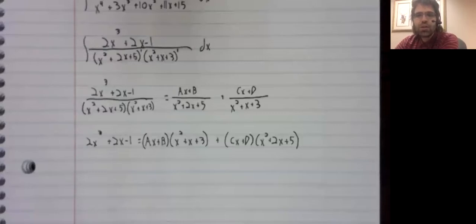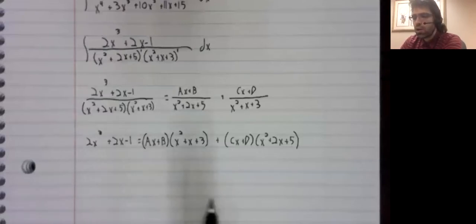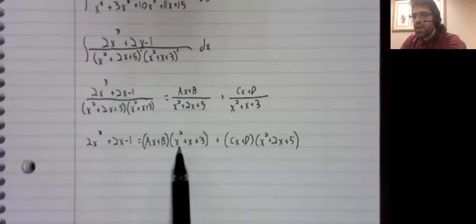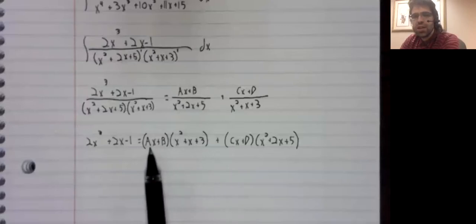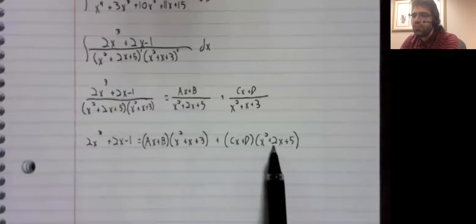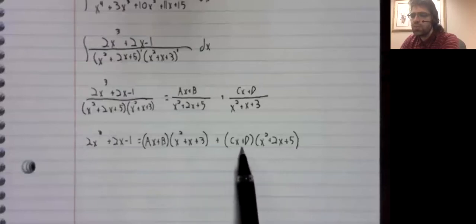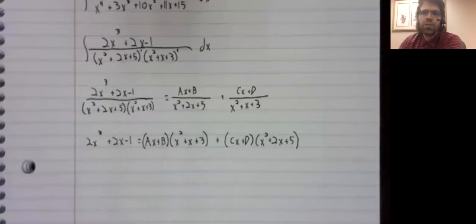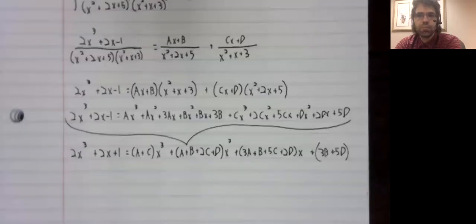So what do we do? More work. We foil this out, or distribute, I guess I should say. And we distribute, I guess. And then we combine like terms. Like so.